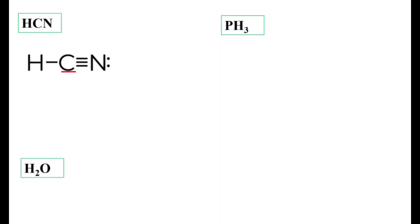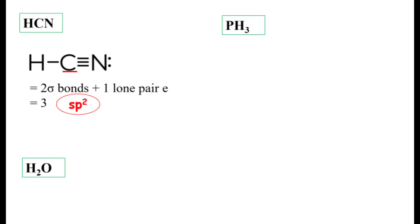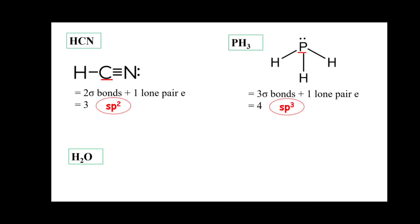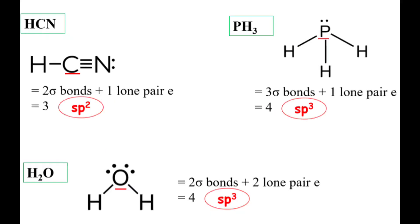As a conclusion, to determine the hybridization of a certain atom, we need to draw the Lewis structure of the molecule and determine the number of sigma bonds and lone pairs around that atom. That's all for our discussions today. Thank you.